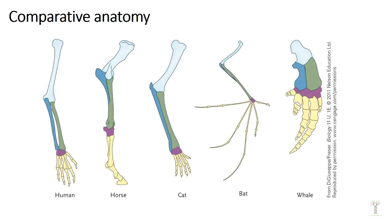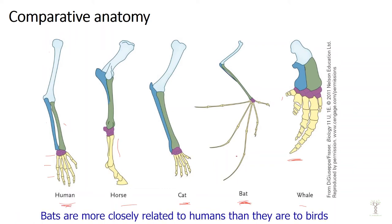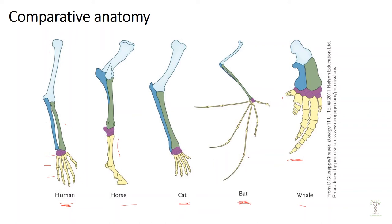We can also compare anatomical structures directly. If we look at the forelimb of a few different species, we can see that the same bone structure exists in all of these mammals. Mammals have a humerus, an ulna, and a radius. We have carpals, metacarpals, and phalanges — these are the bones in our arm. They're somewhat similar in a horse, though we're probably more similar to a cat. In horses and other ruminants, the metacarpals and phalanges fuse to form a hoof. Whales and bats also have similar bone structure in their forelimbs. You can compare how closely related organisms are by looking at their anatomy.